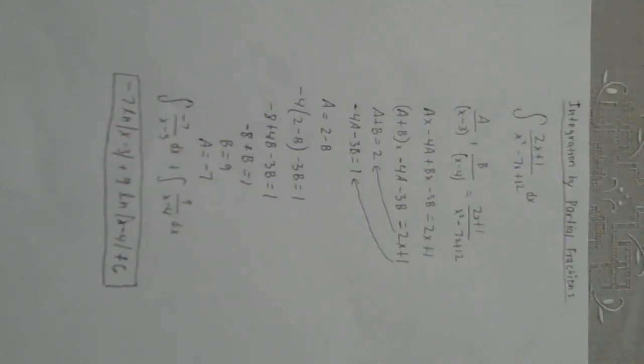Then you make two separate integrals. The integration of negative 7 over x minus 3 dx plus the integration of 9 over x minus 4 dx. And you integrate that and you get negative 7 times the natural log of x minus 3 plus 9 times the natural log of x minus 4 plus a constant.